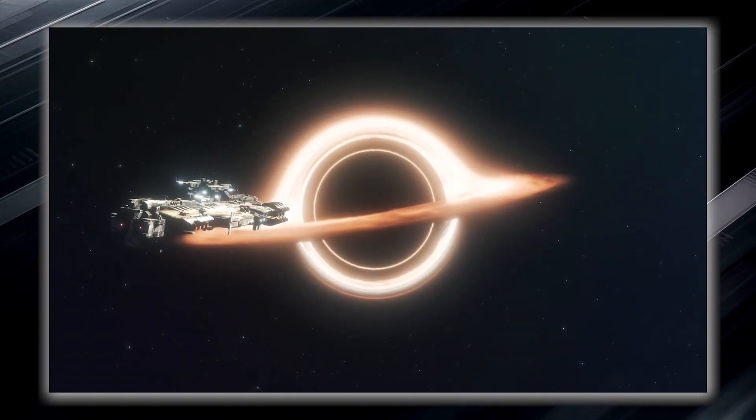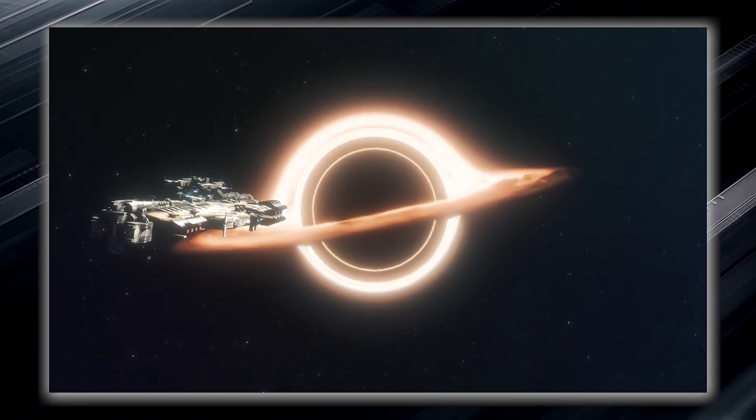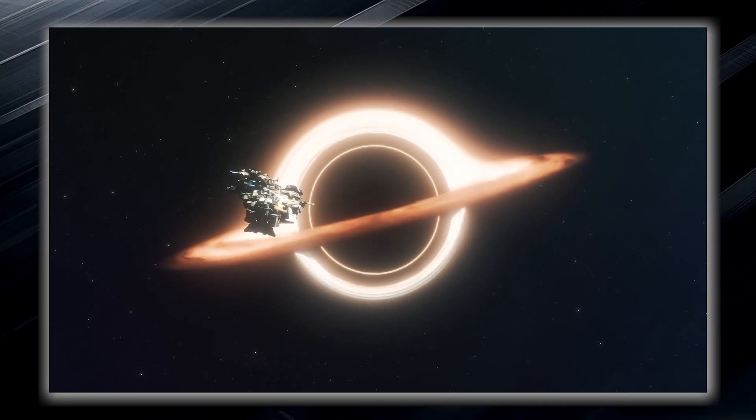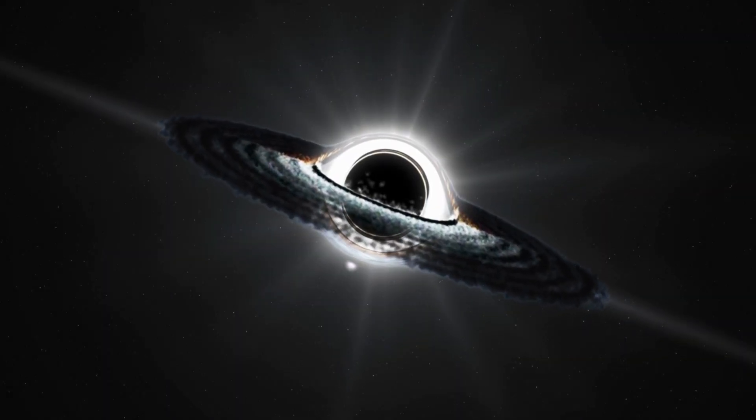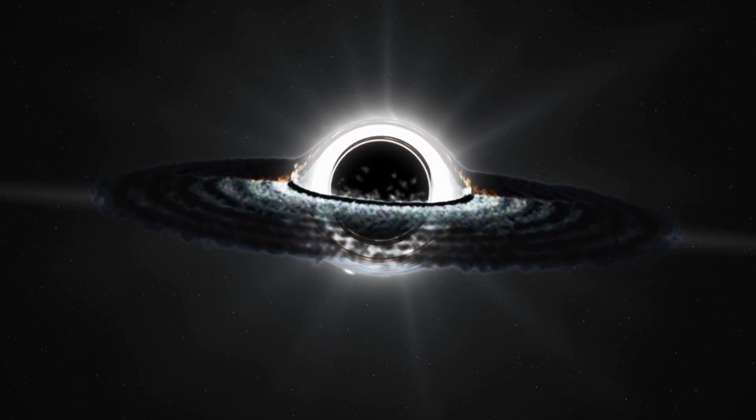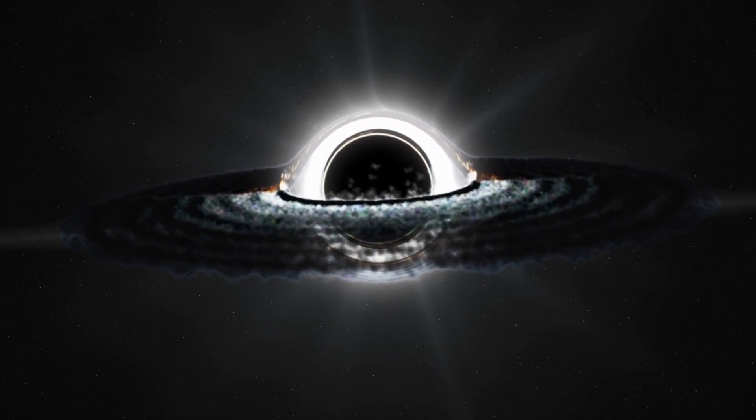Once something, such as an unfortunate spacecraft or even light, crosses its boundary, it can never escape the clutches of the black hole. The event horizon forms an invisible force field that holds everything within it, including light, which is normally considered the fastest entity in the universe.